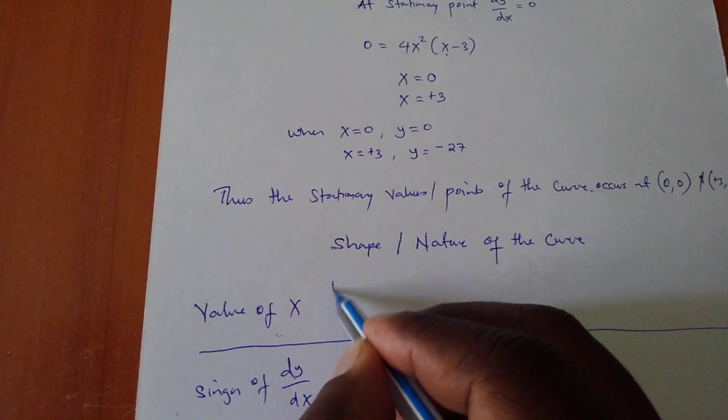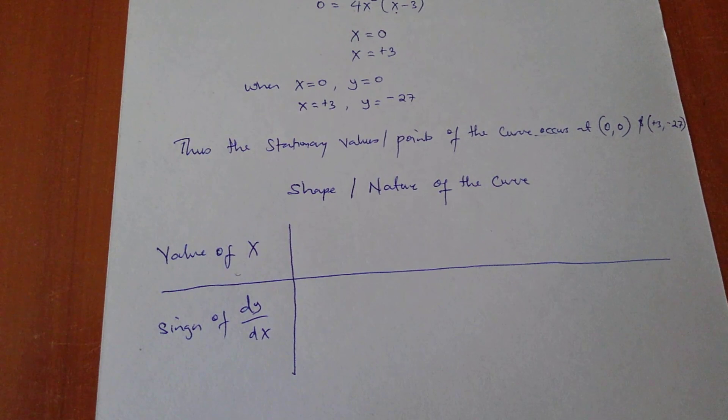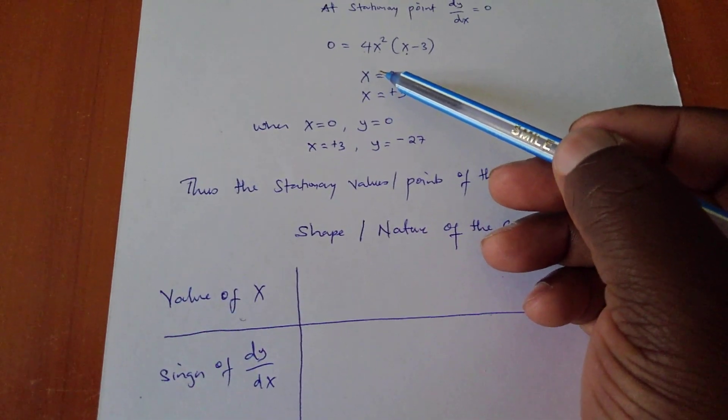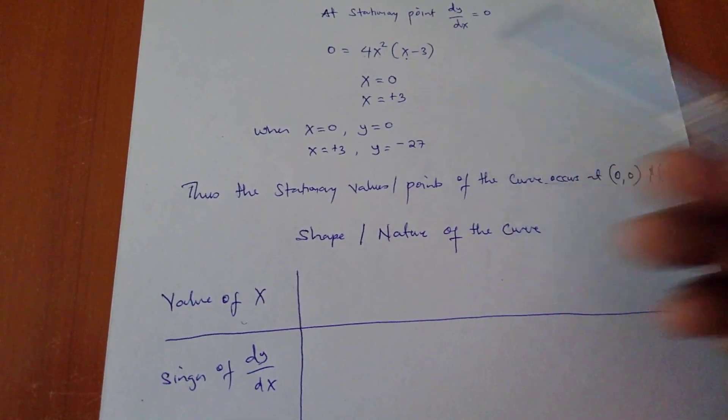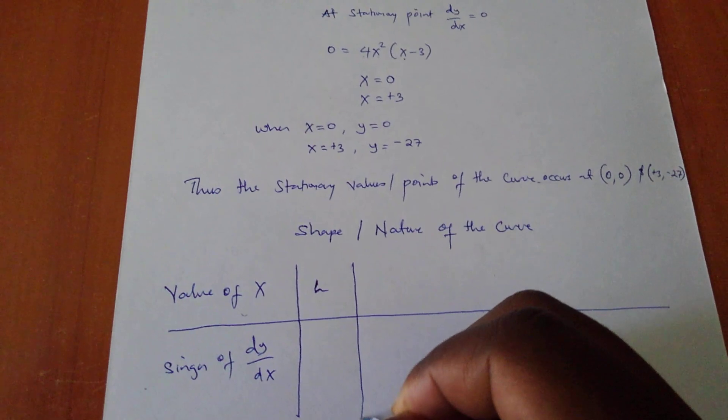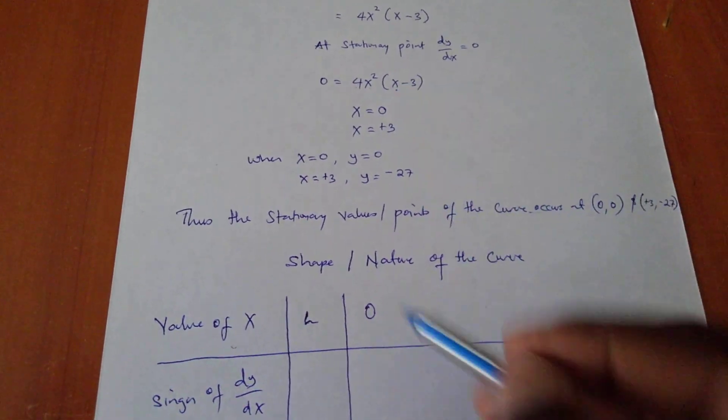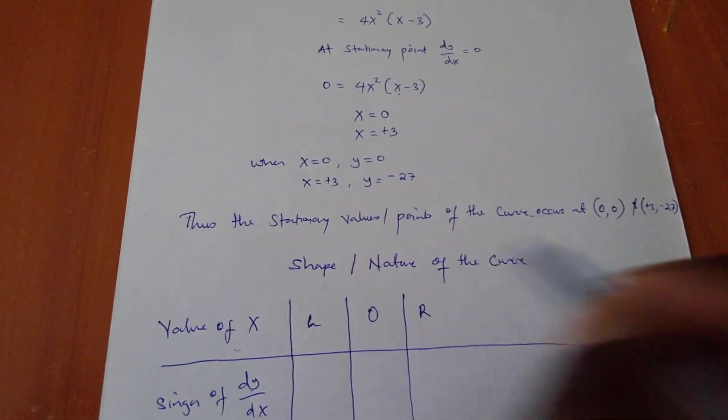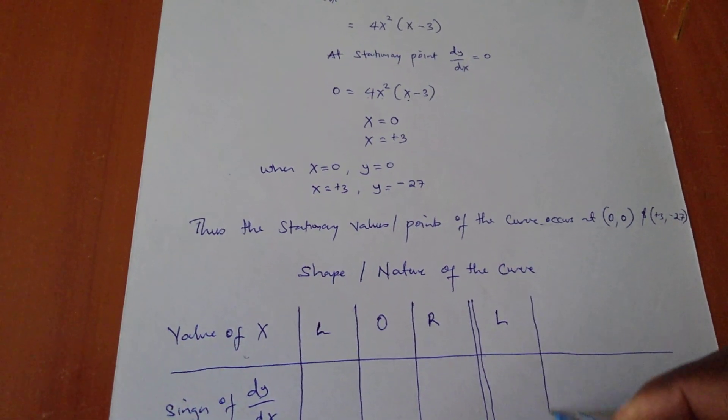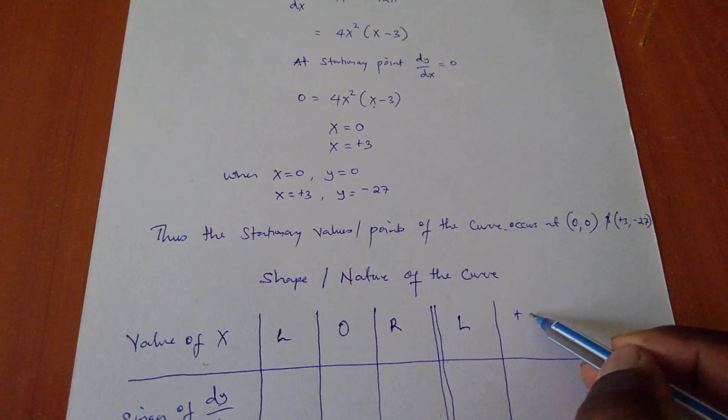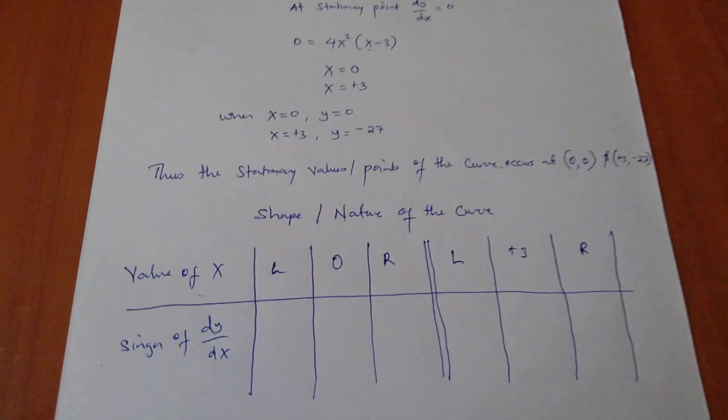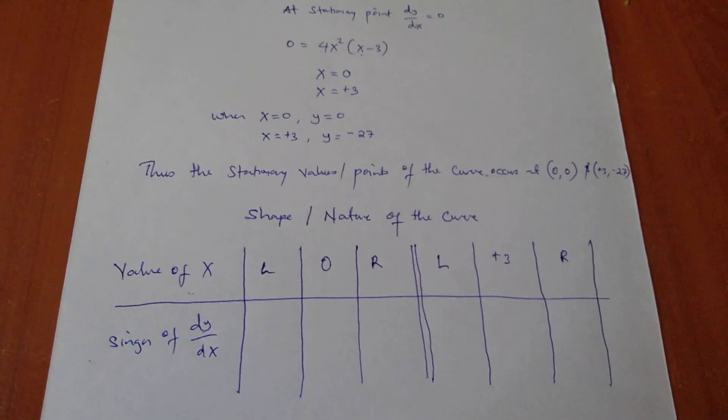And please follow very critically, because what I'm going to do is simple. I don't want to make it very difficult. I'm going to use the value of x from the derivative I've got. So, I'm going to get the left-hand side of that 0, this 0, and also the right-hand side of that 0. So, I'm also going to get the positive 3, and also the right-hand side of the positive 3. Please, look very critically at what I'm going to do.